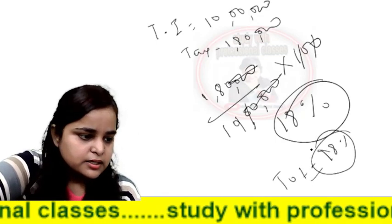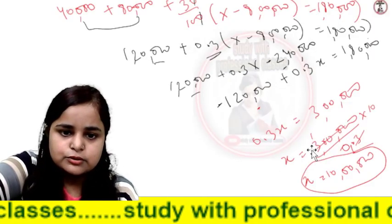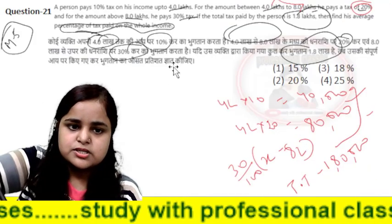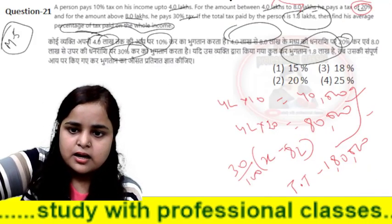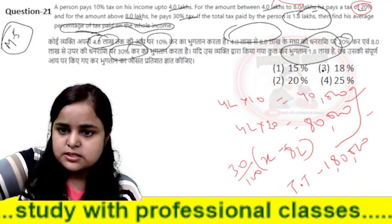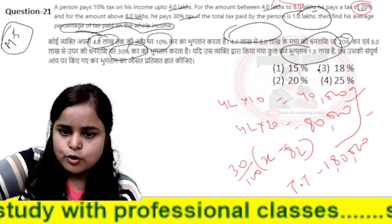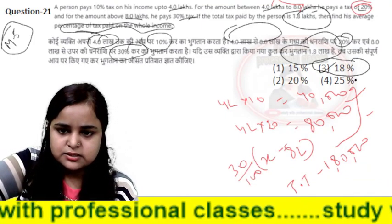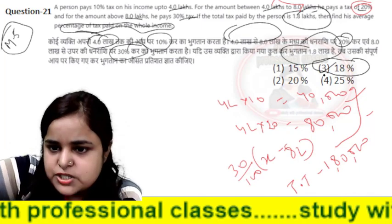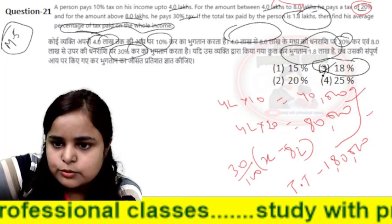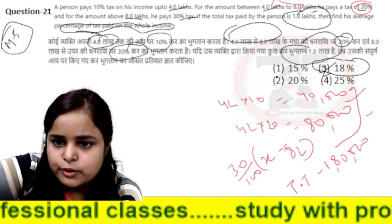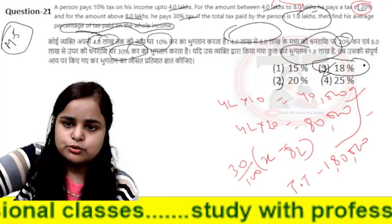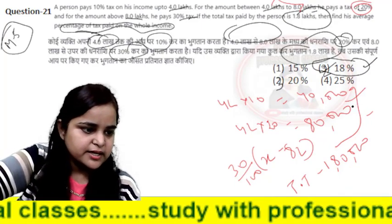Question clear? The correct answer is 18%, which is option number 3. So option number 3 — that is 18%.